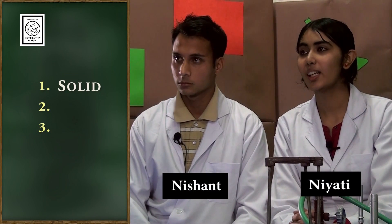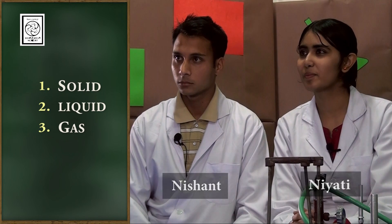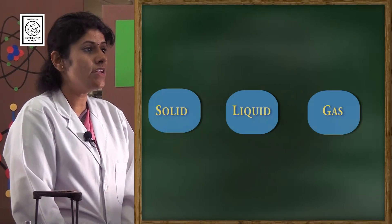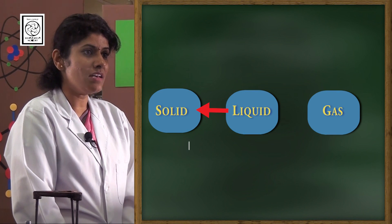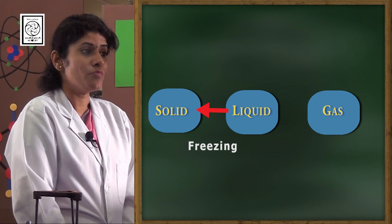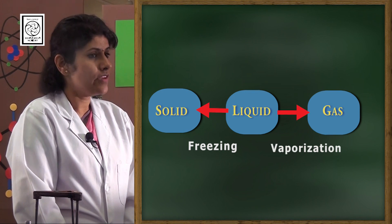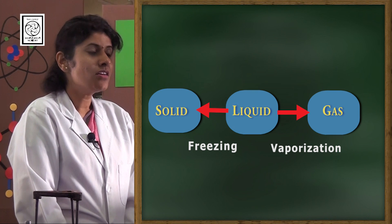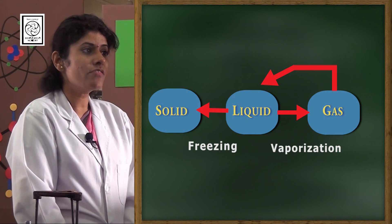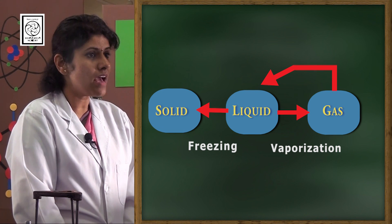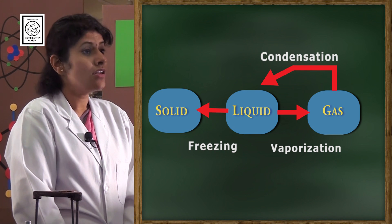Can you name them? Yes, ma'am. The three states of matter are solid, liquid and gas. Very good. Are these states interconvertible? Yes, ma'am. The process of conversion of liquid to solid is known as freezing. The process of conversion of liquid to gas is known as vaporization. And the process of conversion of gas into liquid is known as condensation.